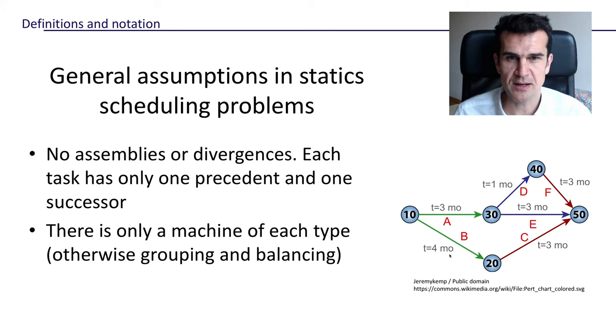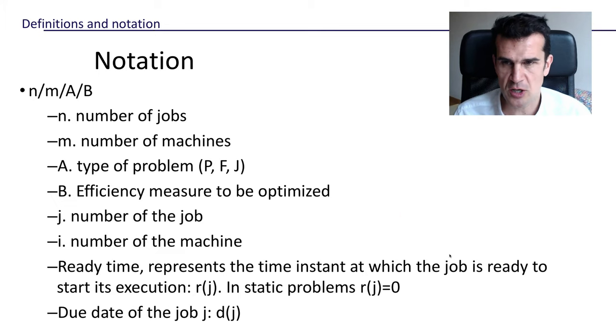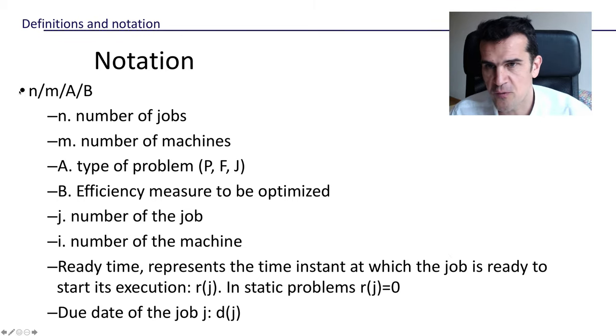Now we're going to see a little bit of notation, just a couple of slides. It's going to be hard, but let's try to make it quick. So we're going to use this notation with the forward slashes. n will be the number of jobs, m will be the number of machines. The third letter here will identify the type of problem: it can be permutation flow shop or flow shop or job shop.